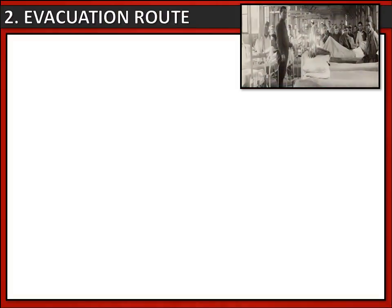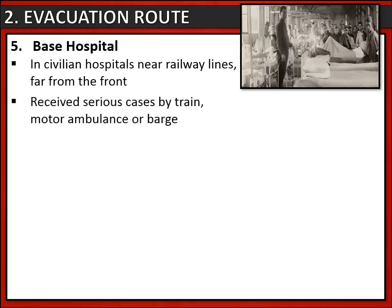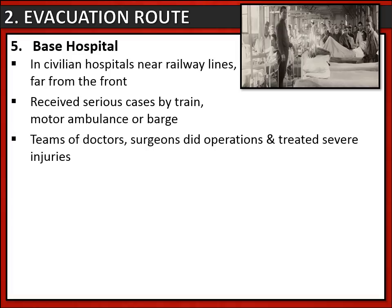Finally, let's look at the last part of the evacuation route, and that was the base hospitals. These were civilian hospitals, far from the front, often close to railway lines. They received their serious cases from the casualty clearing stations, either by train, motor ambulance or even barge. They had teams of doctors and surgeons, and here more advanced operations could be done, and they would treat the severely injured.